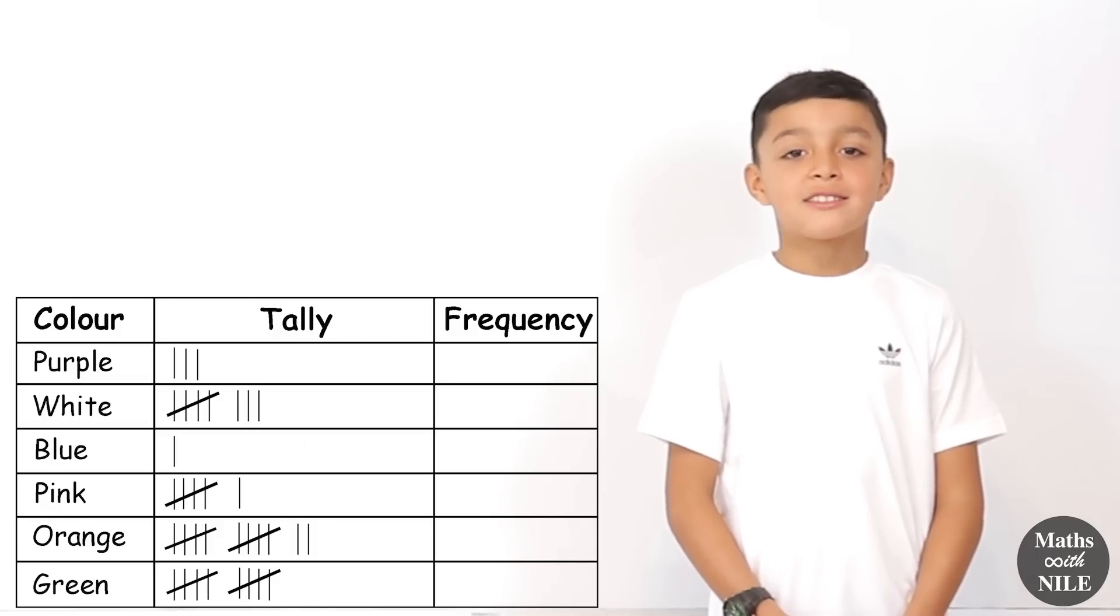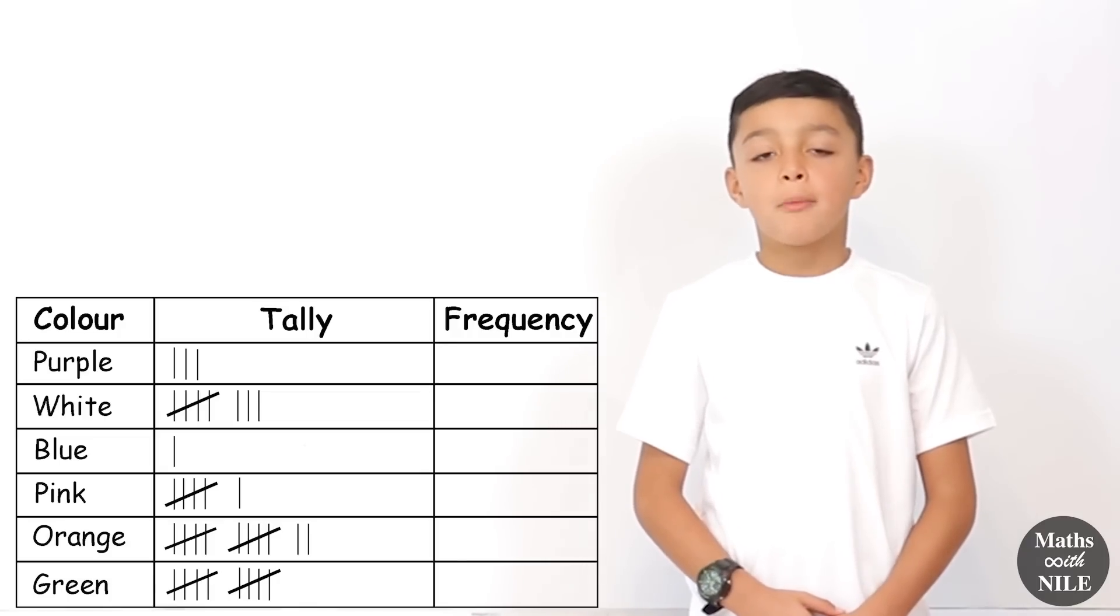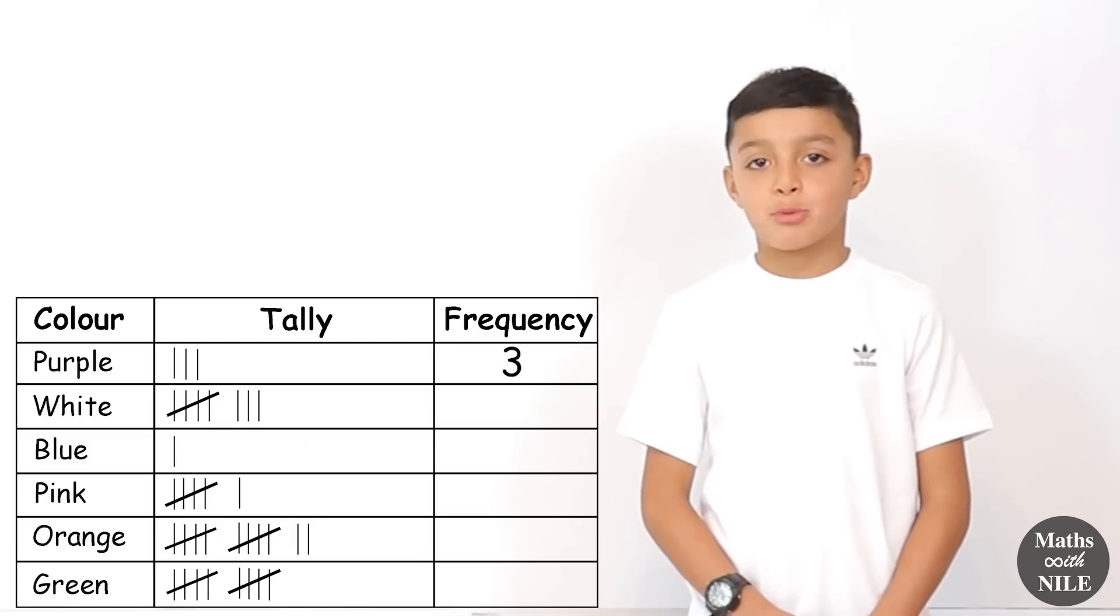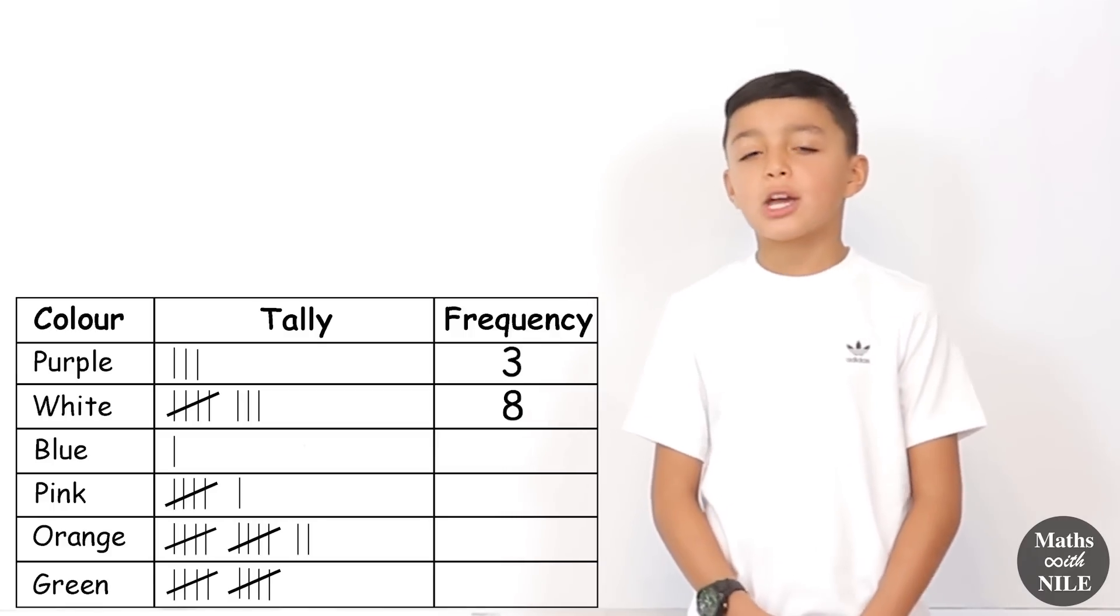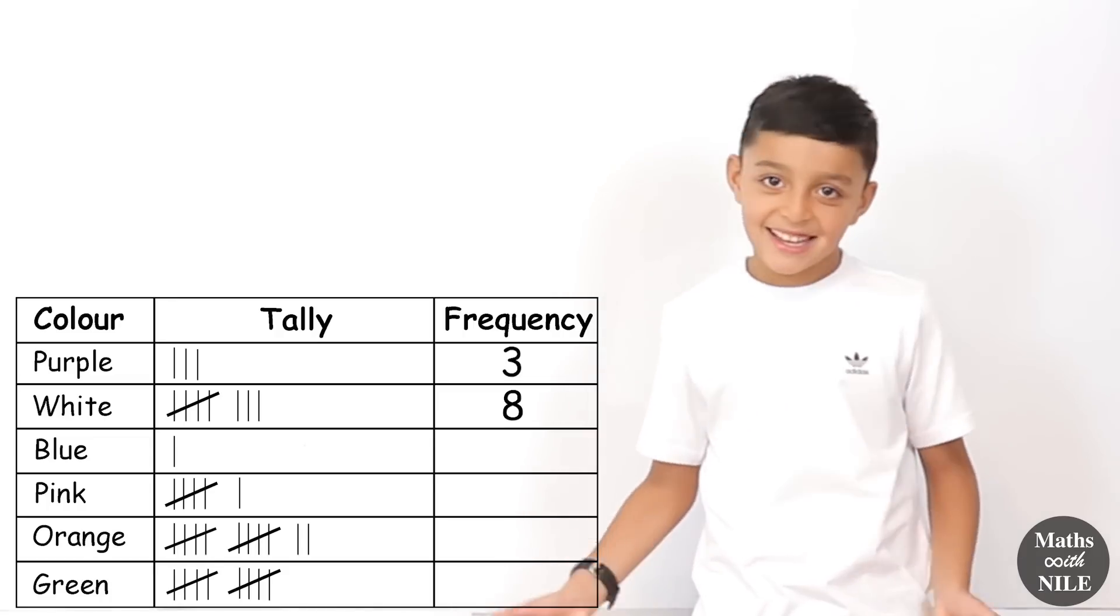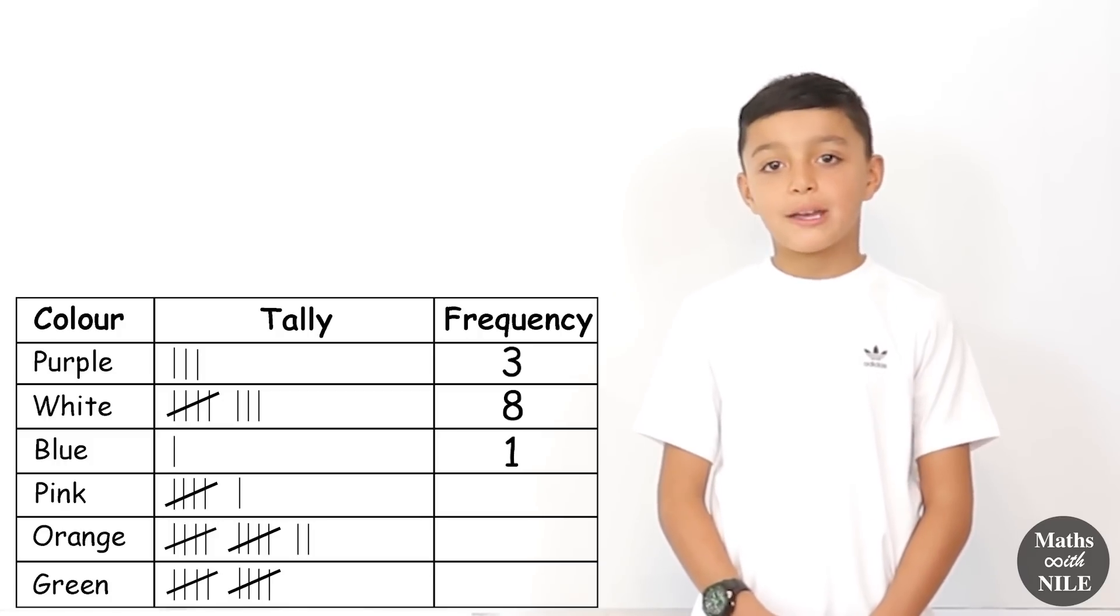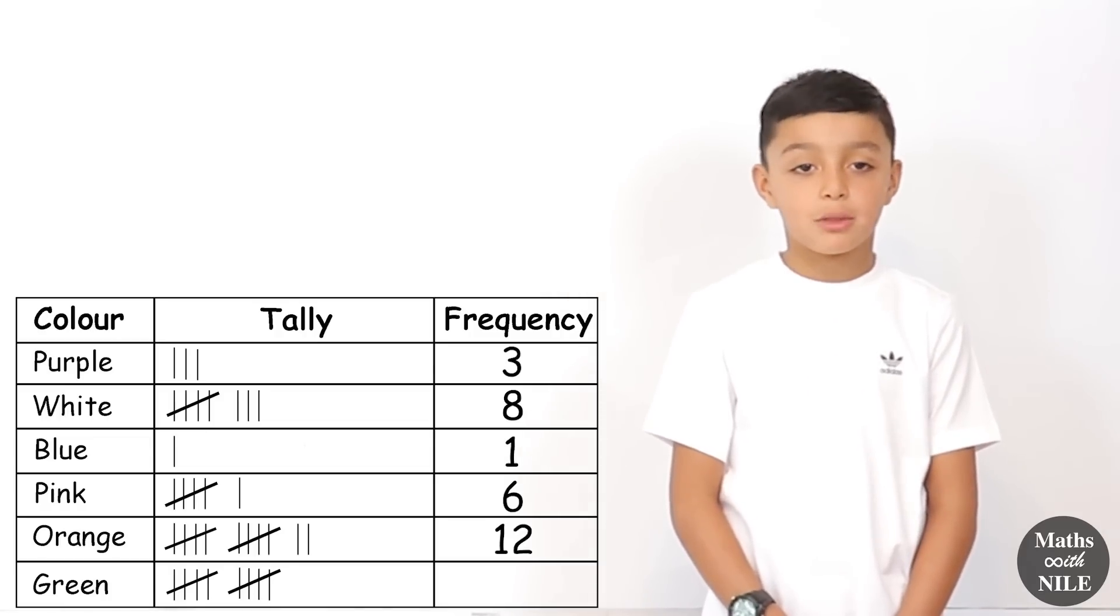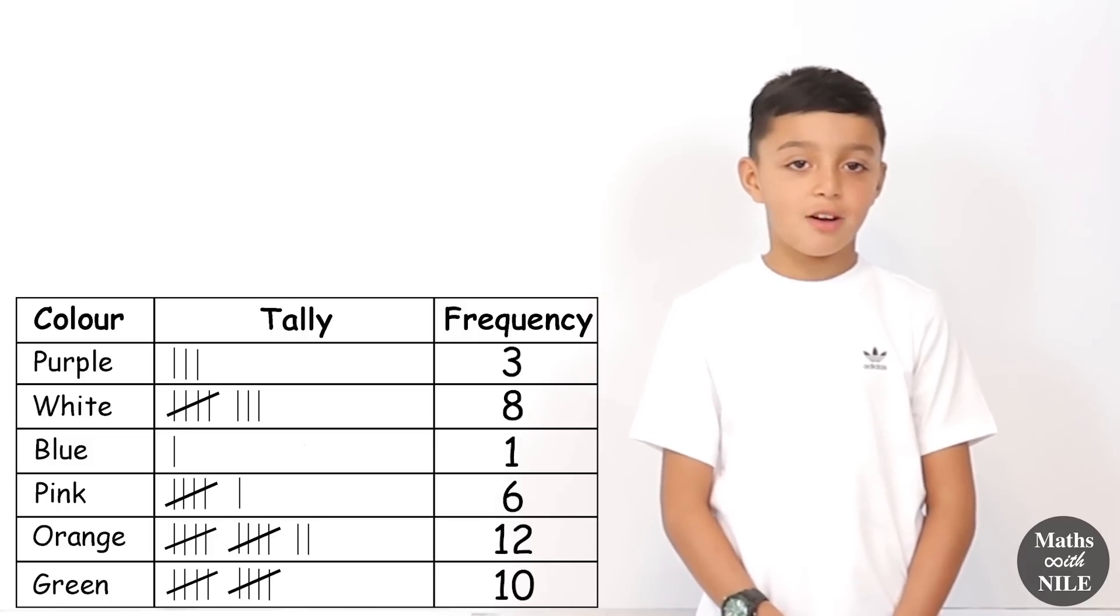So now that we've filled in our tally, we will work out our frequency. So on purple we have three. So we'll put a three next to our three strokes. And then on white, I believe we have eight. So I'll put an eight next to it under my frequency. And then on blue, we only have one sadly. Blue is my favourite colour, but yeah. We only have one and we'll put that one under our frequency. And on pink, we have six. We'll put that six under our frequency. And then orange, we have a whopping twelve. So we'll put that under our frequency. And on green, we have ten. And we'll put our ten under our twelve.